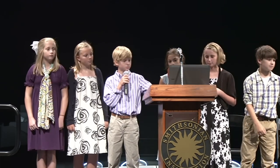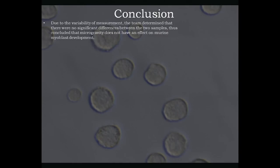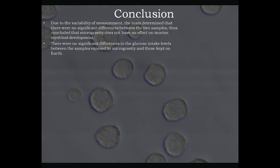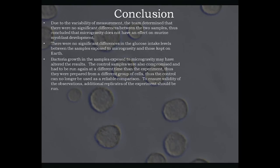Our conclusion: due to the variability of measurement, the team determined that there were no significant differences between the two samples. There were no big differences between the glucose intake levels between the samples exposed to microgravity and those kept on Earth. Bacteria growth in the samples exposed to microgravity may have altered the results. The control samples were also compromised and had to be run at a different time than the experiment, prepared from a different group of cells, so the control can only be used as a limited comparison. To ensure validity of the observations, additional replicas of the experiment should be run.